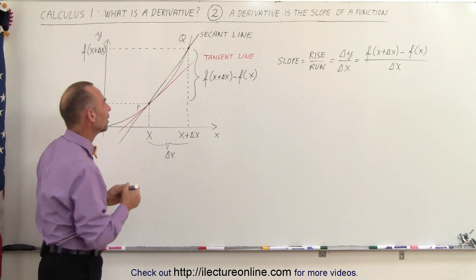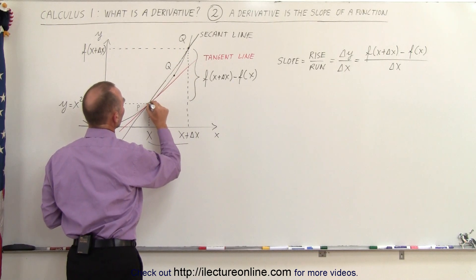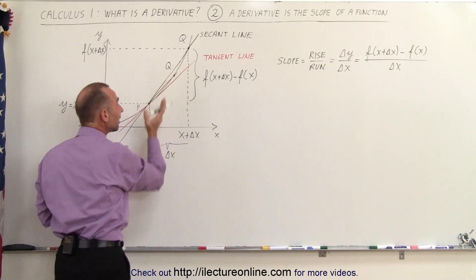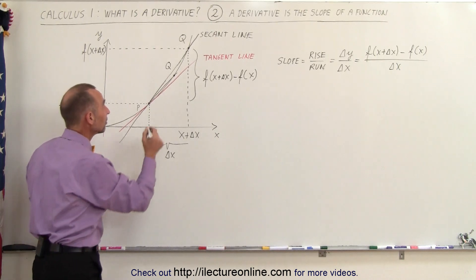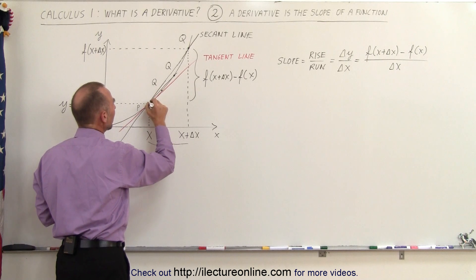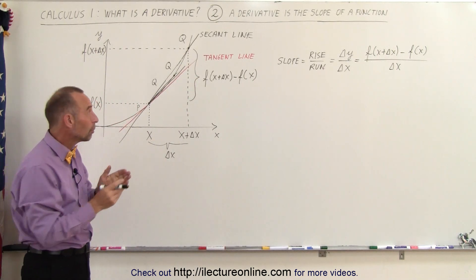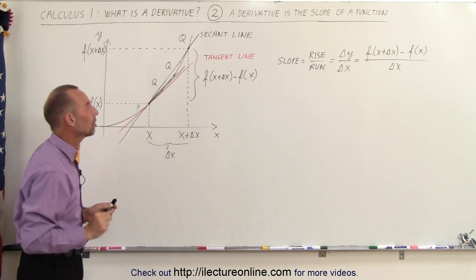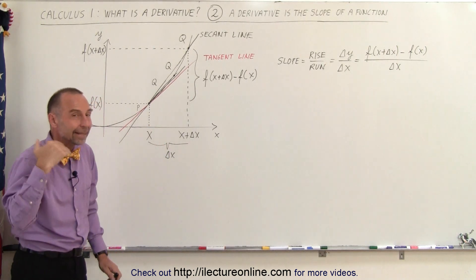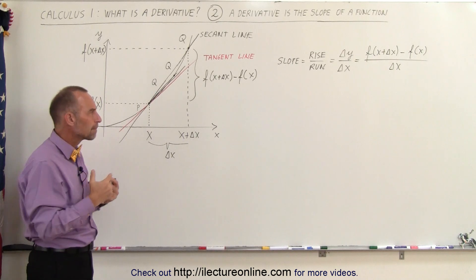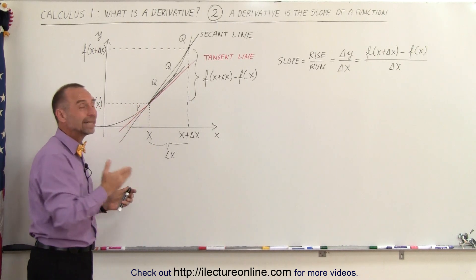To remedy the difference between the secant and tangent slopes, we can make delta x smaller by moving point q closer. When I move q in closer, the slope of that line is much closer to the slope of the tangent line — but not quite yet. Moving q even closer, the secant slope is again much closer to the tangent slope. So I keep moving q closer and closer, making delta x smaller and smaller, until in the limit, as delta x approaches 0, the slope of the secant line equals the slope of the tangent line.